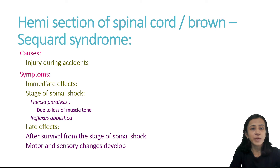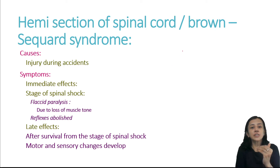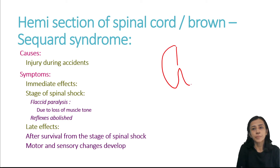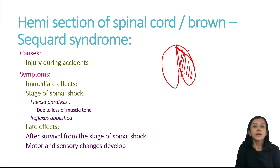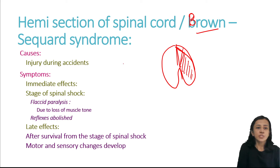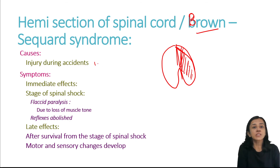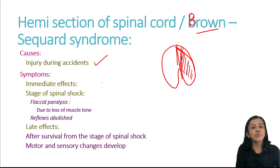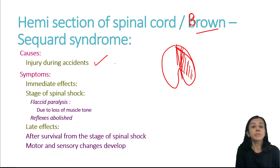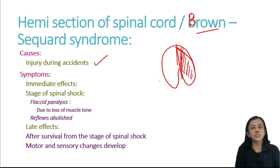The third condition is hemisection of the spinal cord, where injury involves the lateral half of the spinal cord. This is known as Brown-Séquard syndrome or Brown-Séquard paralysis. The cause is accidental injuries. The immediate effects are the same as spinal shock — flaccid paralysis, decreased muscle tone, and abolished reflexes. Brown-Séquard syndrome was first described by the physiologist Brown-Séquard in 1850.